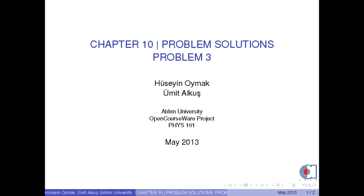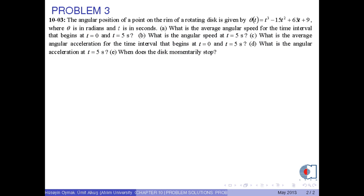In this video, we will solve one problem in Chapter 10. The angular position of a point on the rim of a rotating disk is given by this formula, where theta is in radians and t is in seconds.